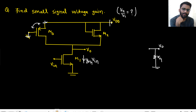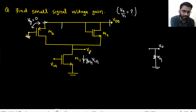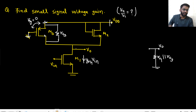VDD is shorted, VG is shorted, so VSG = 0. That means no current in that MOS — it is open circuited. Only R03 remains. So from VNode to ground through that branch, I see R03. VDD is shorted, VG is shorted → VSG = 0 → MOS open circuited → only R03. So from VNode to ground: R01 here, R03 through the PMOS branch.